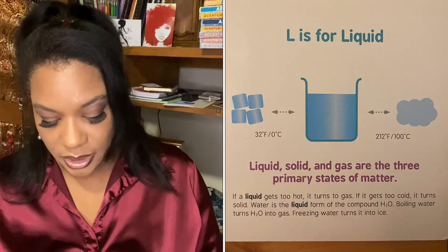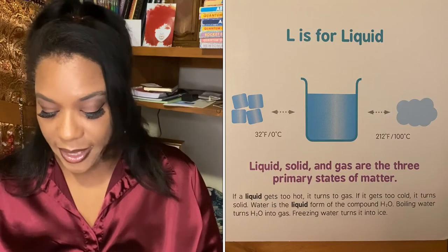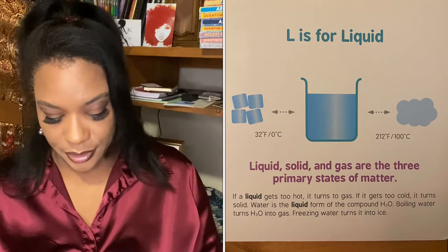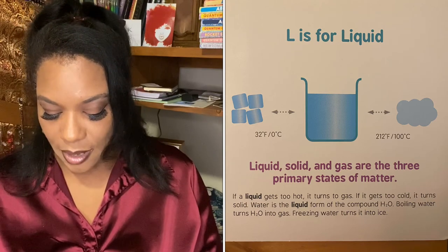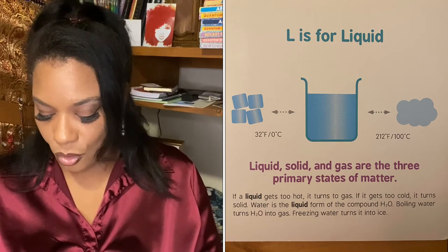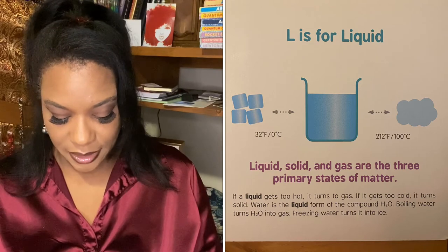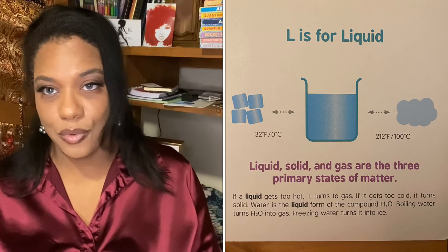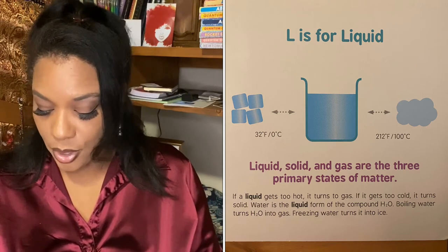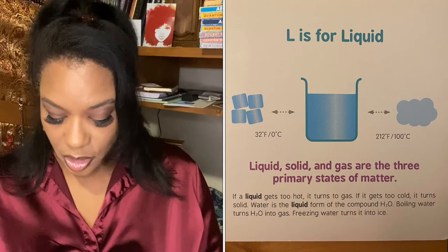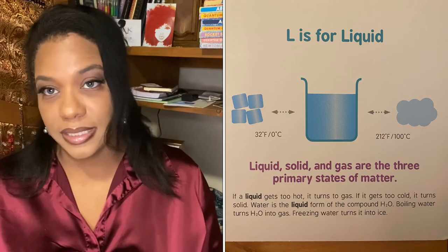L is for liquid. Liquid, solid, and gas are the three primary states of matter. If a liquid gets too hot, it turns to gas. If it gets too cold, it turns solid. Water is the liquid form of the compound H2O. Boiling water turns H2O into gas. Freezing water turns it into ice.